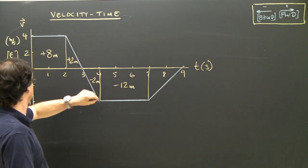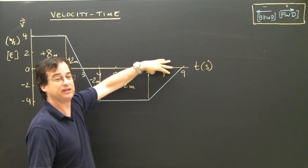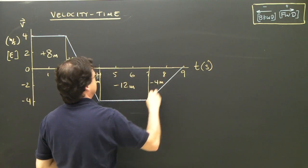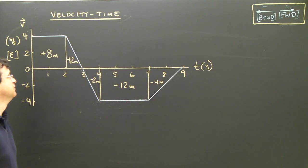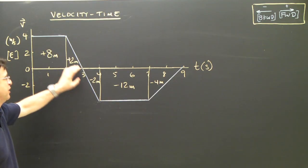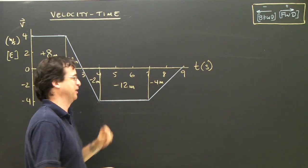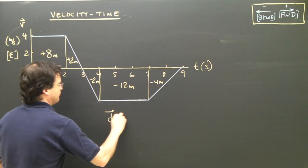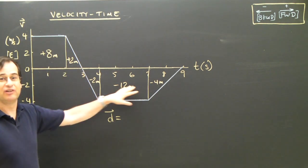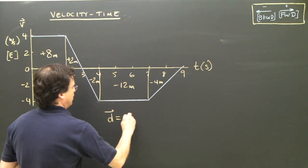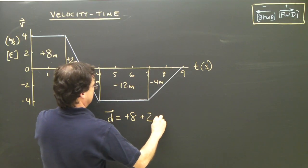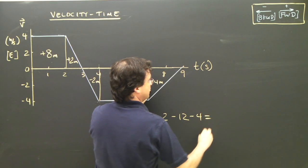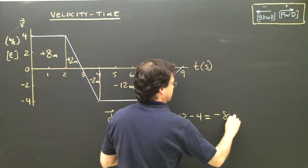The last section is a triangle: base times height divided by two. Four times two is eight, divided by two is four, so this is negative four meters. So the areas are: forward eight meters, forward two meters, backwards two meters, backwards twelve meters, and backwards four meters. For displacement, I take into account positives and negatives since they indicate direction: positive eight plus two minus two minus twelve minus four equals negative eight meters.